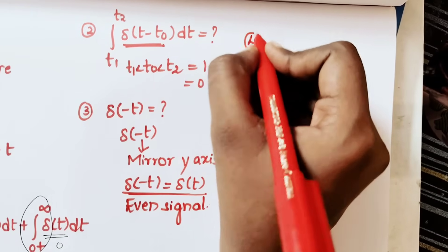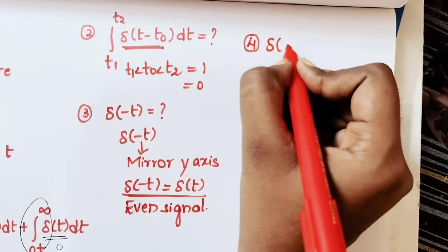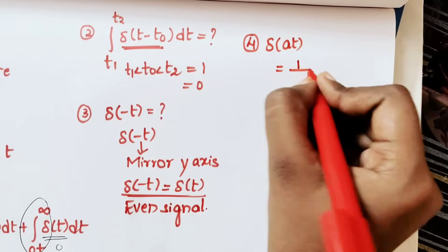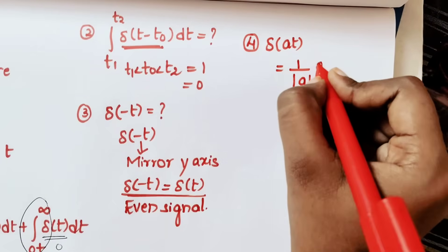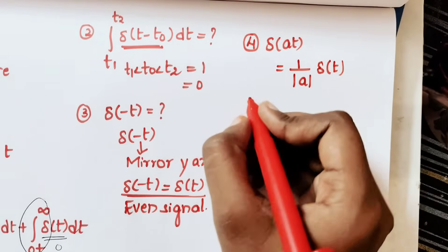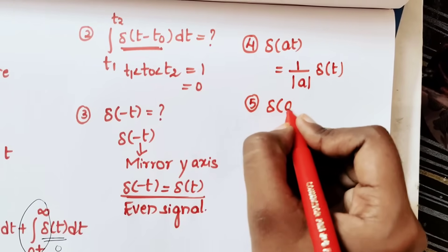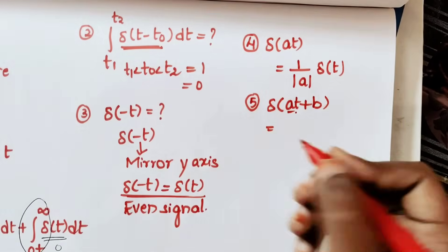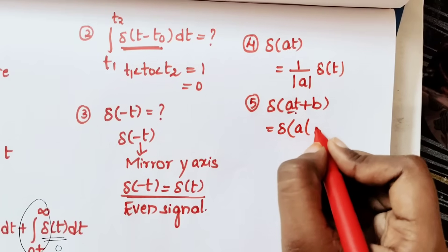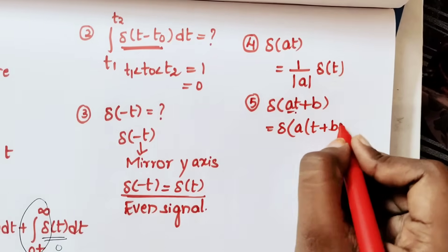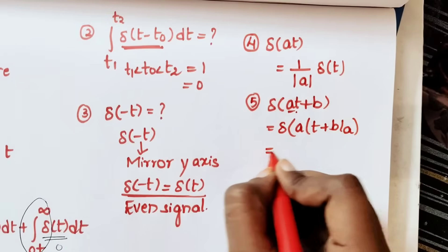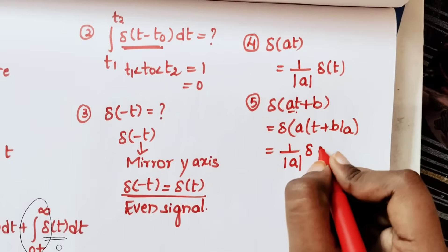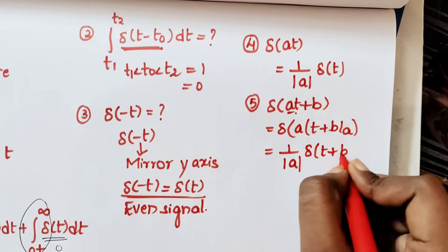Here comes the fourth property. δ(at) — what will be the value of this? This will be equal to (1 / |a|) · δ(t). And the fifth property: δ(at + b). Here, taking a common, it becomes δ(a(t + b/a)), and that value will be equal to (1 / |a|) · δ(t + b/a).